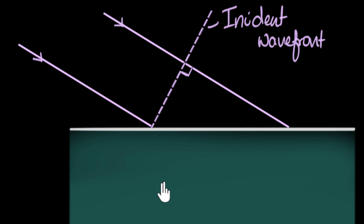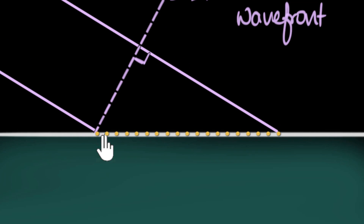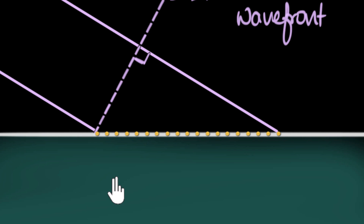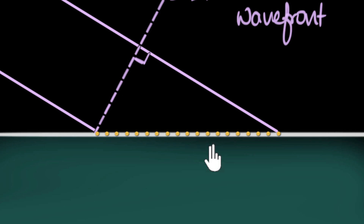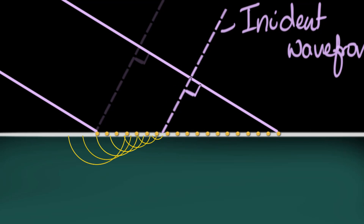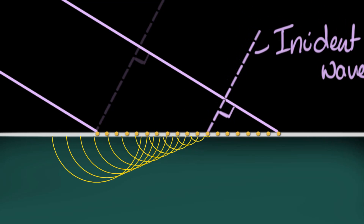To prove Snell's law, we have to draw the refracted wavefront, and we can do that using Huygens' principle. Huygens says that every point on the wavefront can be thought of as a source. When the incident wavefront hits that point, it gets activated and starts producing secondary spherical waves. The waves produced in the same medium are the reflected waves — we'll ignore those. The important thing is that the waves in the water are slower than the waves in air. As the wavefront goes forward, more and more secondary waves are formed, but the secondary waves are slower than the incident waves.